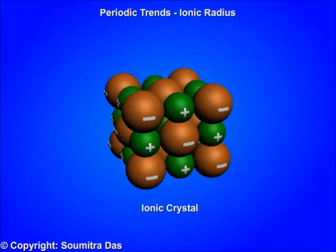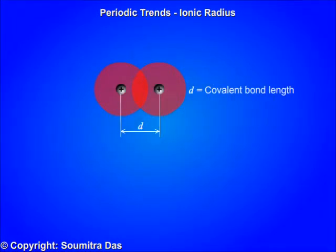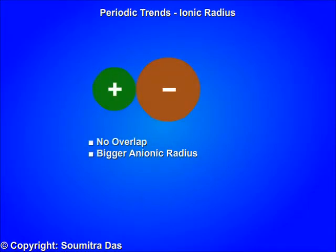The calculation of ionic radius is based on the distance between cation and anion, and not the covalent bond length which is used to measure covalent radius. Electron clouds in ions do not overlap as they do in covalent bonds, so the ionic radius of anions without this overlap is seemingly bigger.